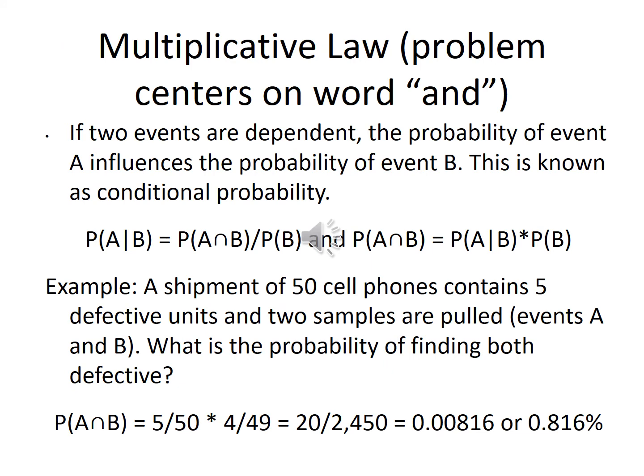If you see the word 'and' in the problem, use the multiplicative law. If two events are dependent, P(A|B) = P(A∩B) / P(B), and P(A∩B) = P(A|B) × P(B). This is the conditional probability formula for dependent events.